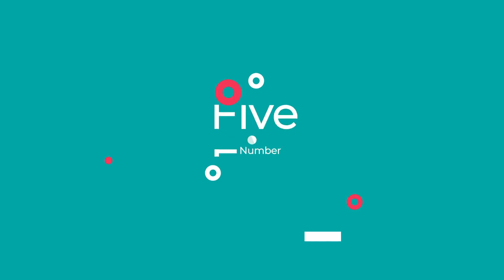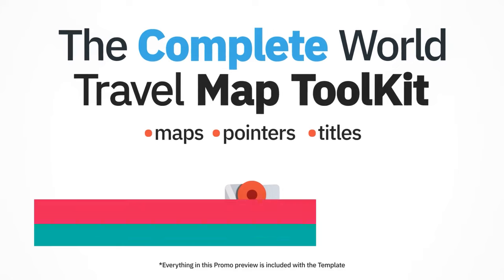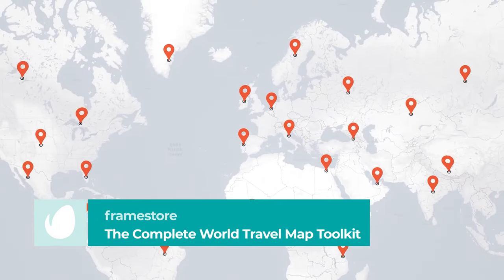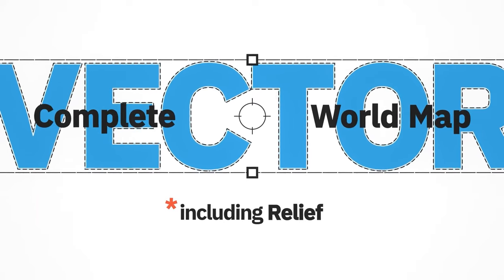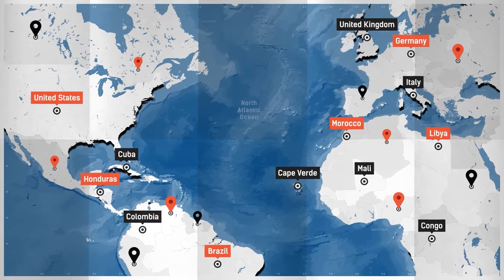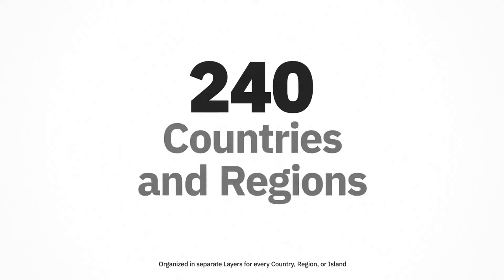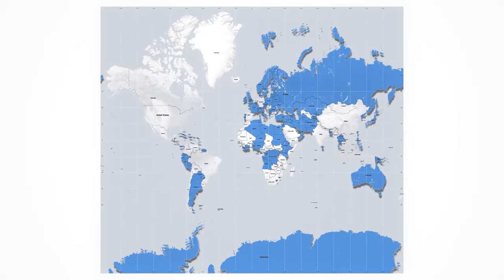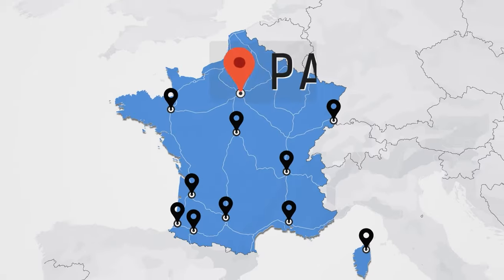Number 5. The Complete World Map Travel Map Toolkit by Framestore. If you don't know how to create a travel map animation, Framestore has your back. This toolkit includes everything you'll need to start your own project, including a world map with 240 labeled countries, 6 travel pointers, and 17 travel icons.